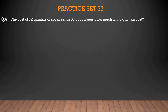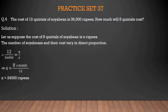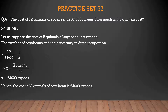The cost of 12 quintals of soya bean is 36,000 rupees. How much will 8 quintals cost? Let the cost of 8 quintals of soya bean be X rupees. The number of soya beans and their cost vary in direct proportion. So 12/36,000 = 8/X. Therefore X = 8 × 36,000 ÷ 12 = 24,000 rupees. Hence, the cost of 8 quintals of soya bean is 24,000 rupees.